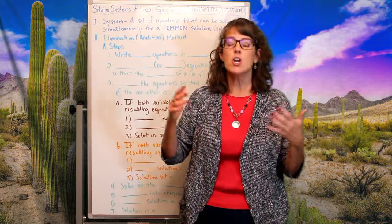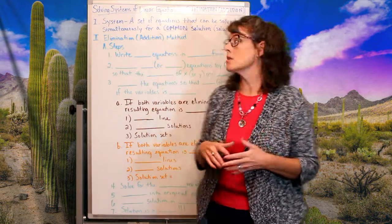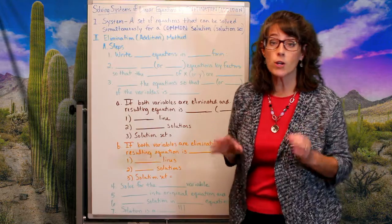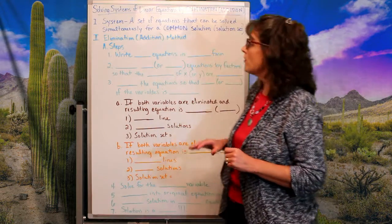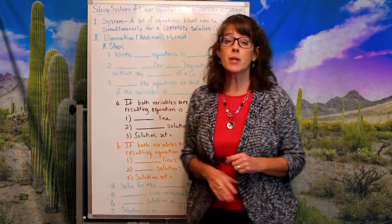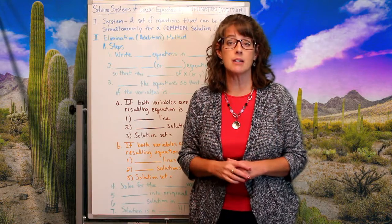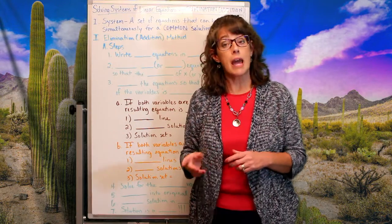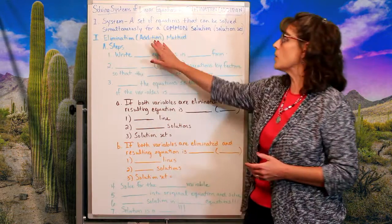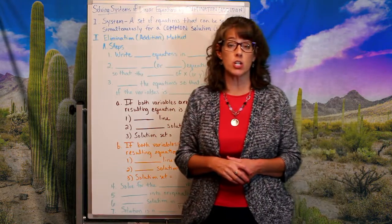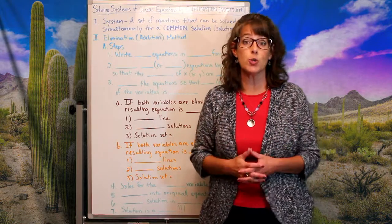We've seen that graphing is cumbersome, especially with fractions, so the other two methods are great shortcuts. Mathematicians are not creative — we call it like we see it. This is called the method of elimination because I want to eliminate a set of variables, and it's also called the method of addition because I'm going to add the two equations to make that happen.